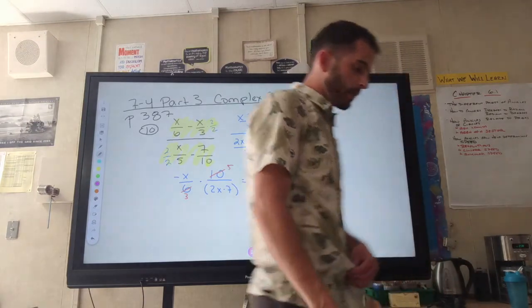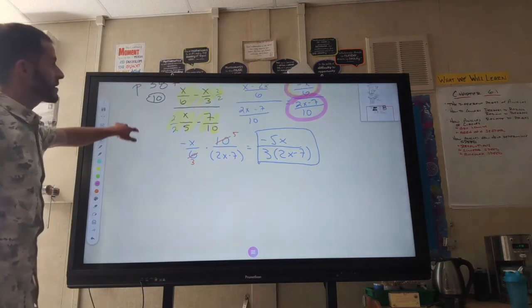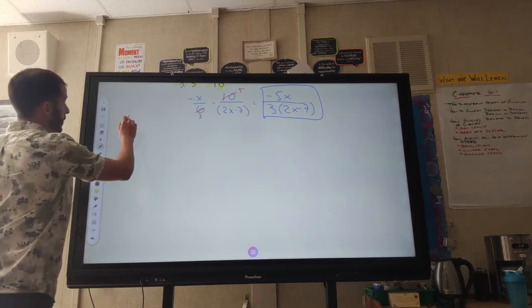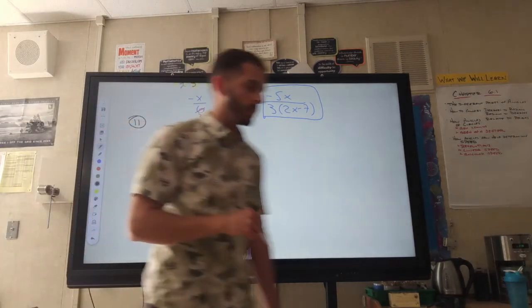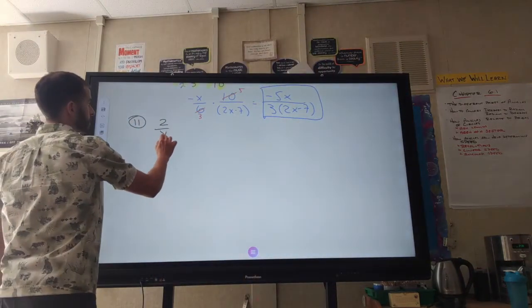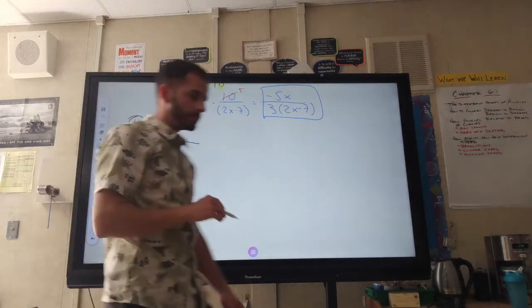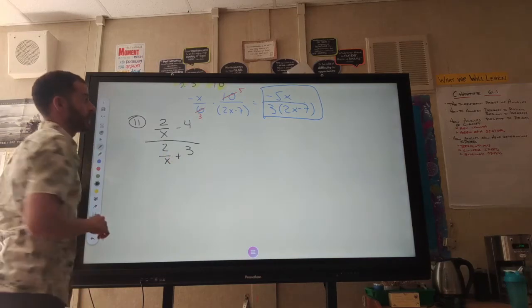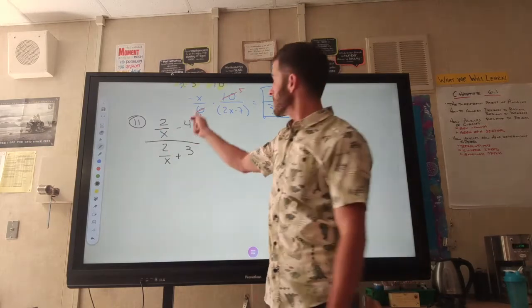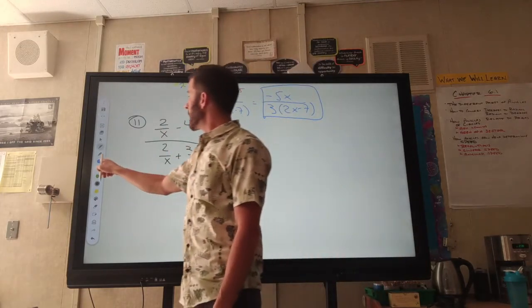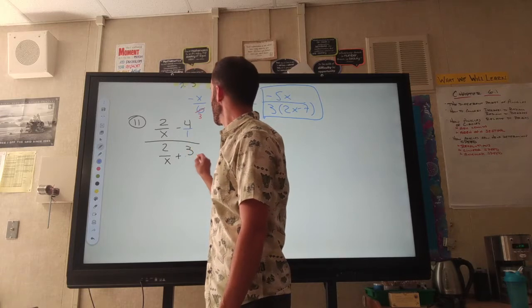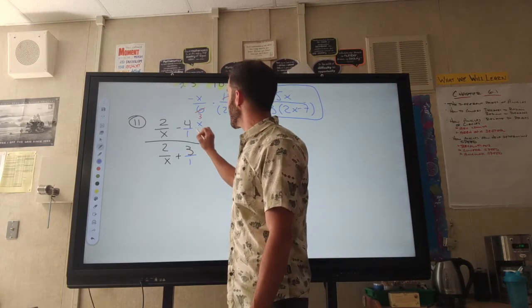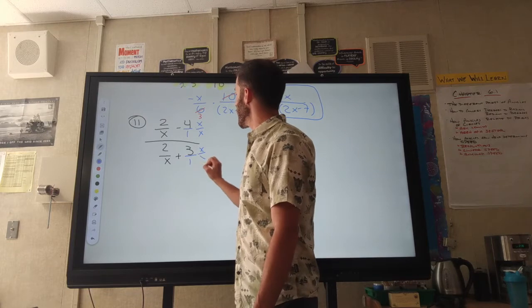Moving on to number 11 — a little bit different. Instead of dealing with one fraction on top and one on the bottom separately, I'm going to do something to get rid of all of the denominators at once. Remember, you can't just cross out terms because of the minus and plus signs. But what you can do is get a common denominator for everything. So I'm going to multiply by x over x in both the numerator and denominator.